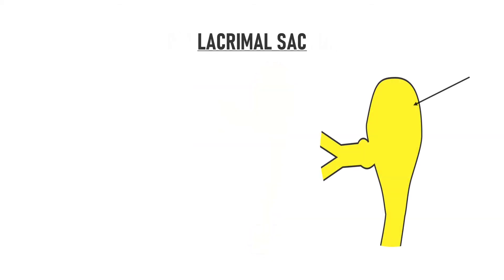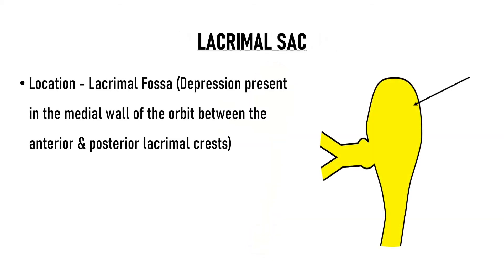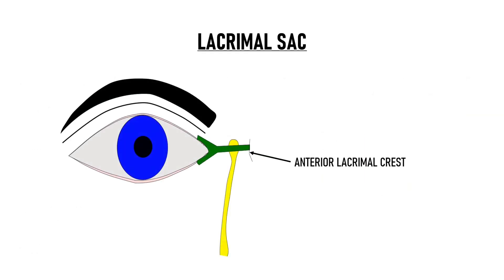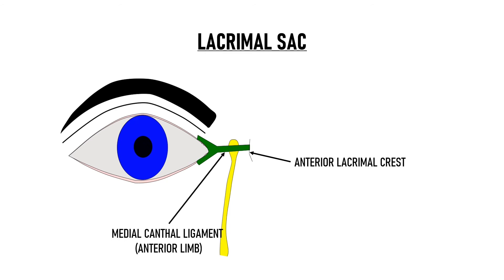The lacrimal sac lies in the lacrimal fossa, a depression on the medial wall of the orbit bounded anteriorly by the anterior lacrimal crest and posteriorly by the posterior lacrimal crest. The lacrimal sac is about 12.5 mm long and 2.5 mm in diameter, with a volume of 0.1 ml. It lies between the anterior and posterior limbs of the medial canthal ligament — the green part visible here is the medial canthal ligament. The part of the sac that lies above the superior border of the medial canthal ligament is known as the fundus of the sac.